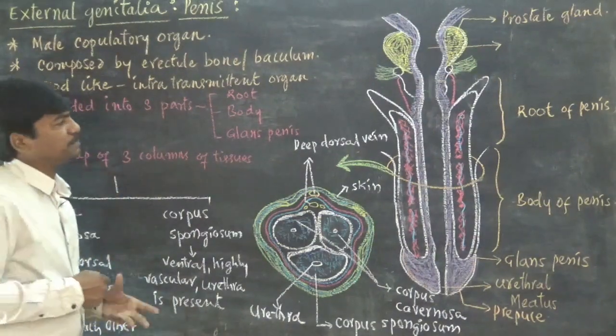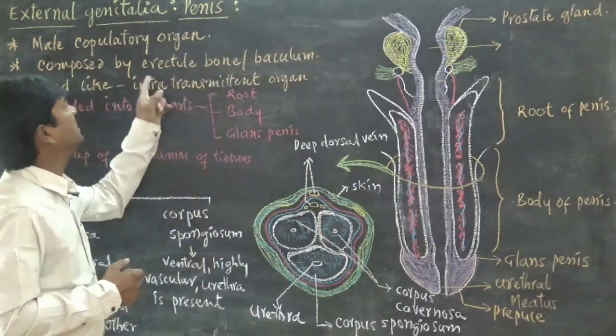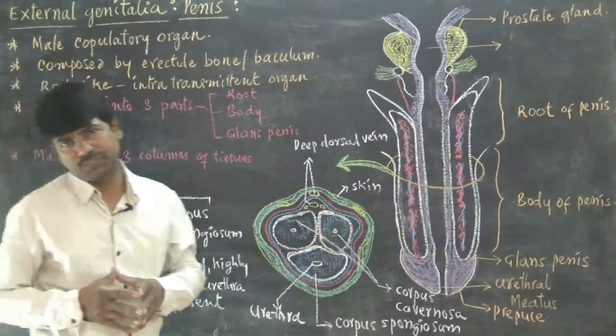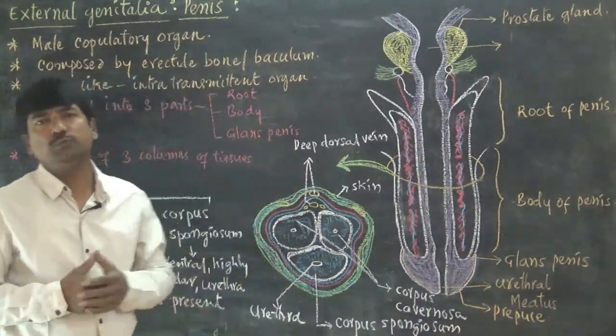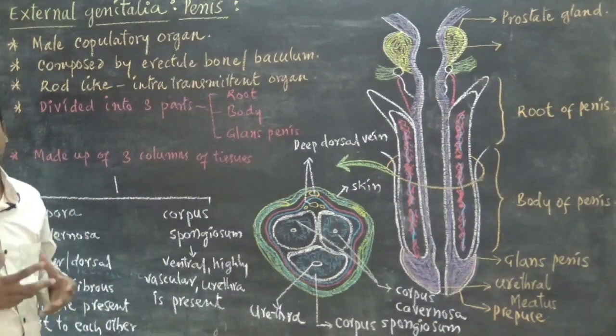It is composed of specific tissue where bone is present. That bone is known as erectile bone or baculum, present inside the tissues. By that process, during copulation, the penis will transform into rod-like structure.